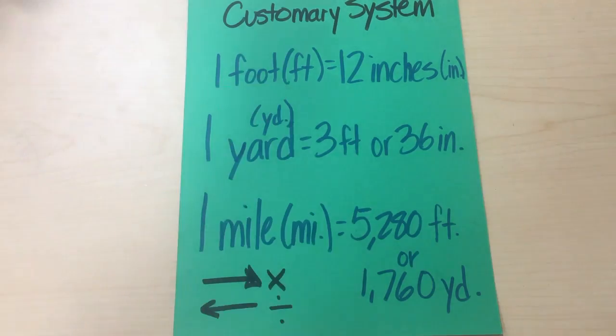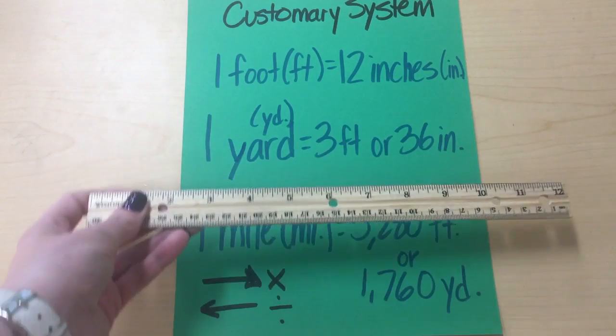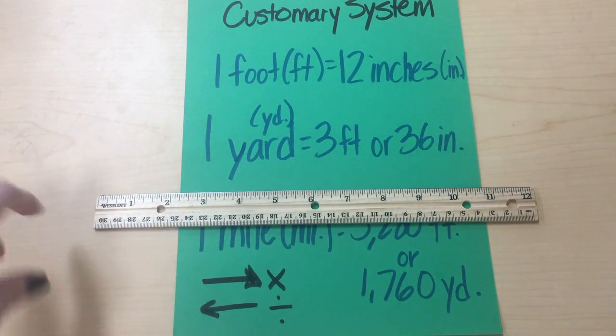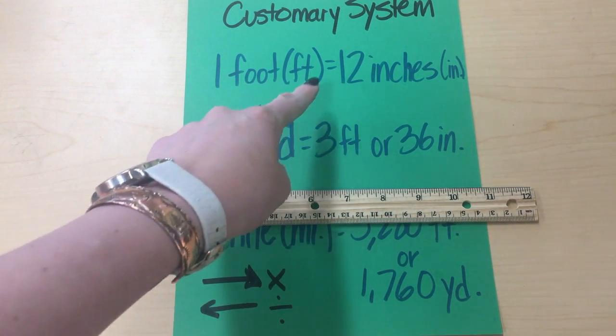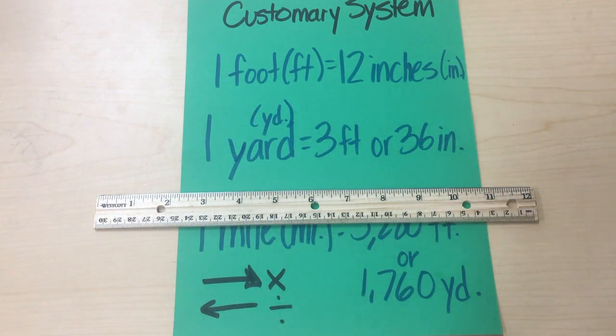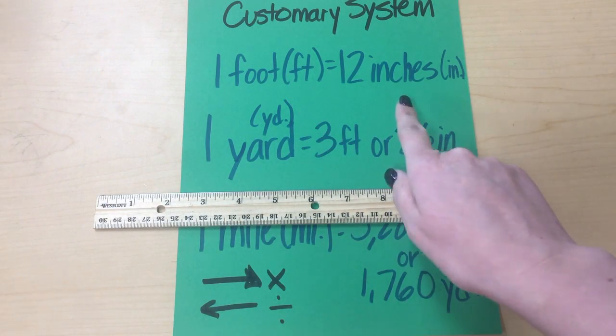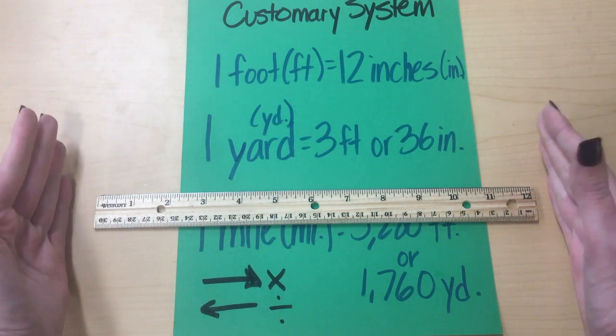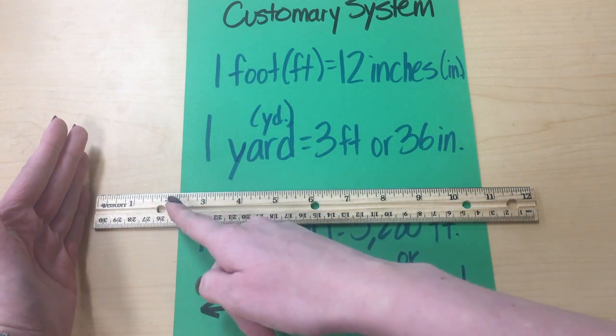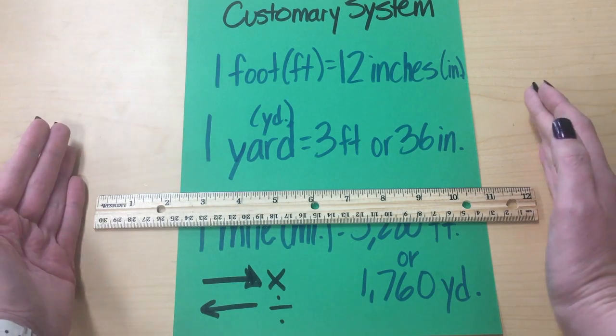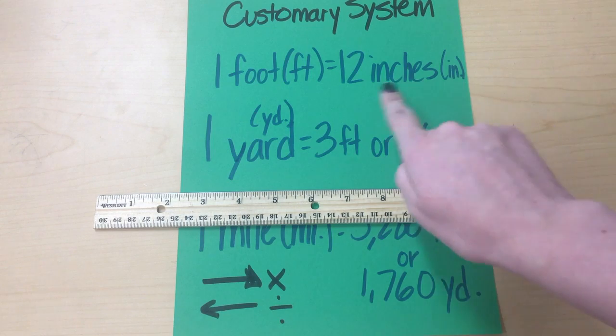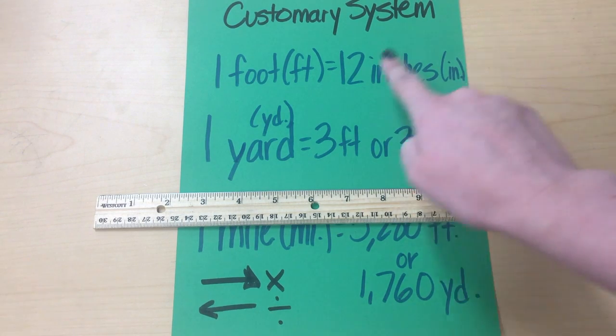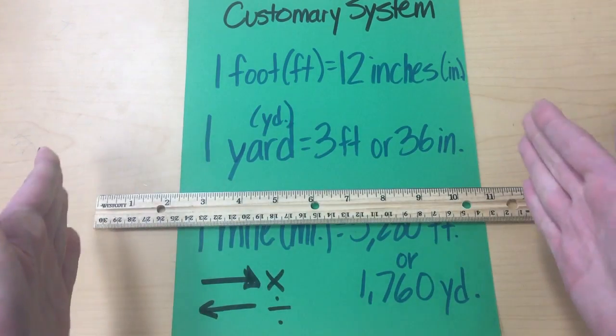The first one is a foot. Here we have a foot. You guys have probably seen this before, but our ruler is a foot long. A foot is abbreviated by FT. We can also say a foot is actually 12 inches. As we can see right here, these big numbers go all the way up to 12. That's inches. So this is an inch, and the way we abbreviate inches is IN. So 12 inches equals one foot.